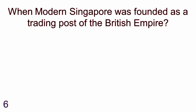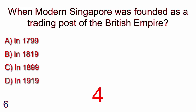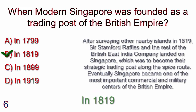When was modern Singapore founded as a trading post of the British Empire? In 1799, in 1819, in 1899, in 1919. Answer is in 1819.